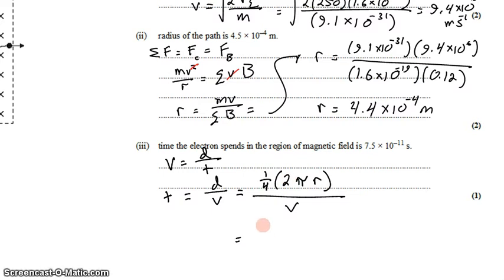And the velocity is the velocity, which we calculated earlier. A quarter of a half is a half. So, this is one half pi times the radius, 4.4 times 10 to the negative 4 meters,